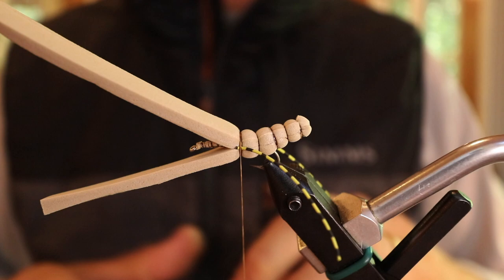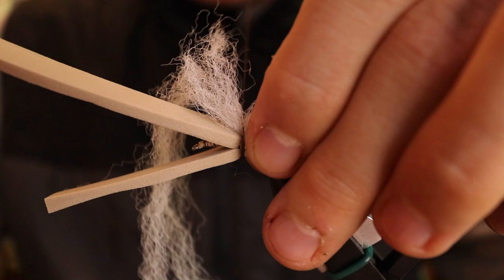From there I can put my antron wing on here, I'm going to go ahead and tie that in at this point, double it over and cut it just so it's a little bit longer than that abdomen.